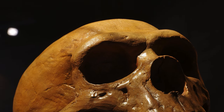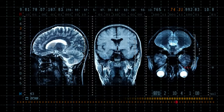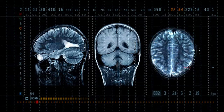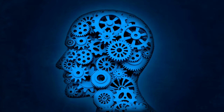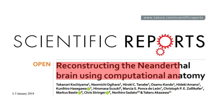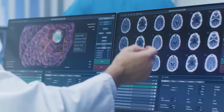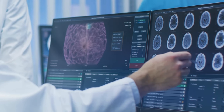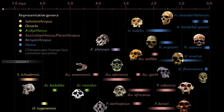Now we don't have Neanderthal brains lying around, but scientists used advanced computer techniques to virtually rebuild them based on their skulls. In recent research, scientists used computational anatomy to reconstruct the brains of Neanderthals and early modern humans based on fossil crania. They employed CT scan data generating three-dimensional structures of brain surface, and explored differences in brain structure between Neanderthals and modern humans.